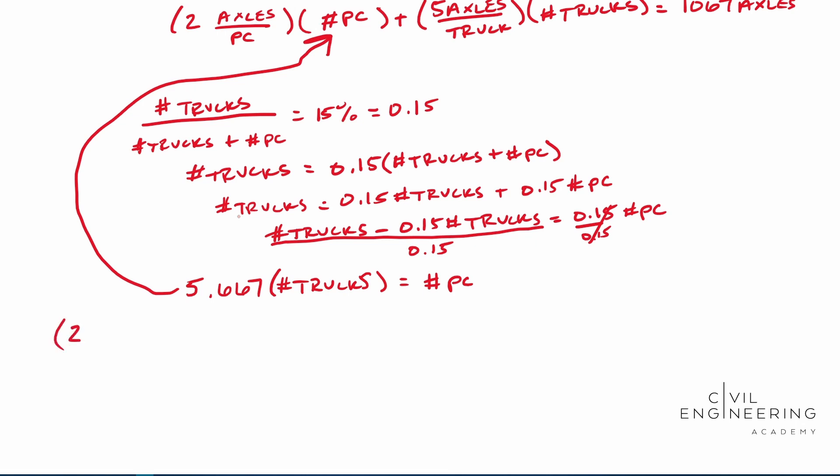With that said, this right here actually ends up being something like this: two times the axles per passenger car. Keep it the same here. Times the number of passenger cars. Well, remember we solved for that. So this is actually 5.667 times the number of trucks.